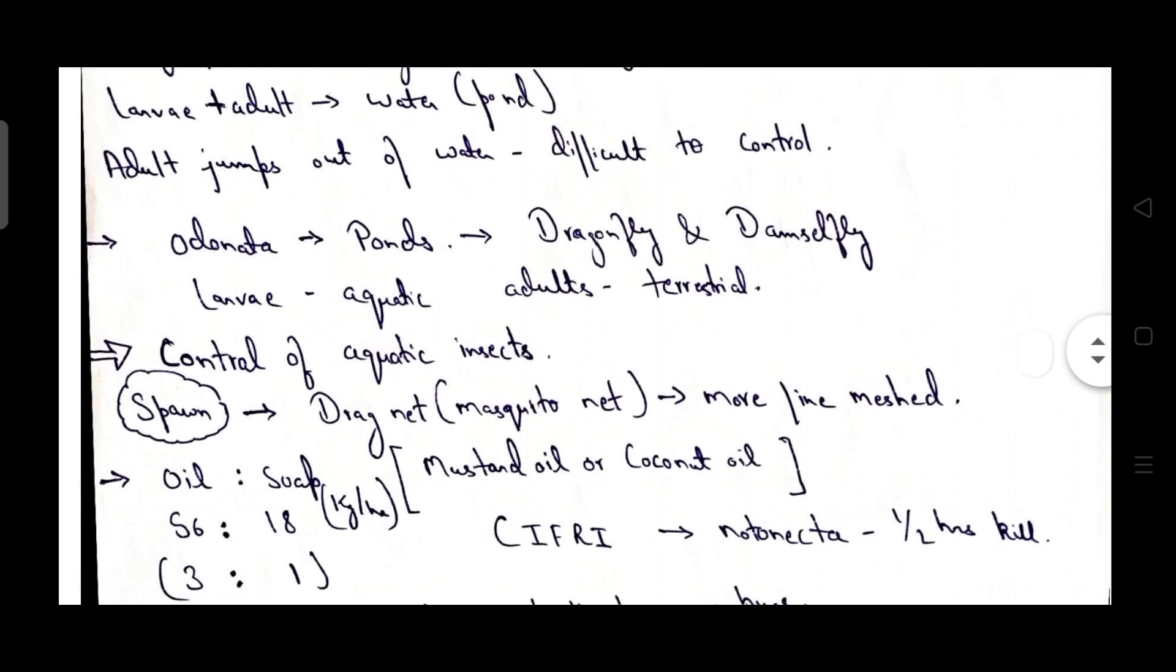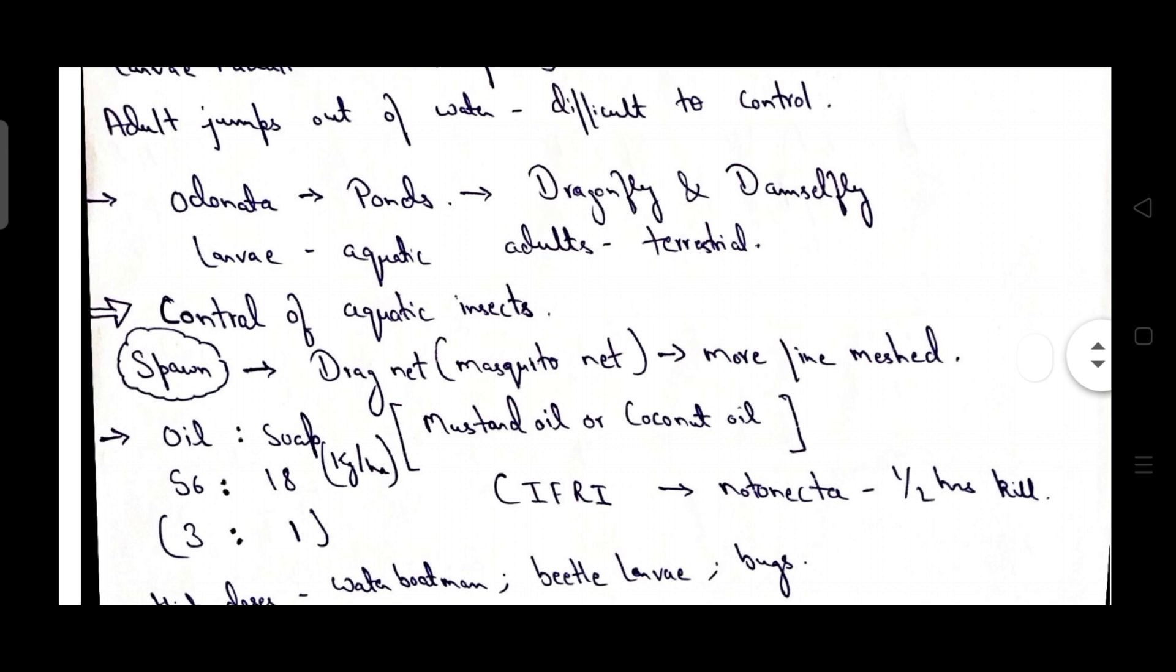Then coming to Odonata, that's the third order. They prefer to live in pond environment. They include dragonfly and damselfly. Larval form are aquatic but adult forms are terrestrial.